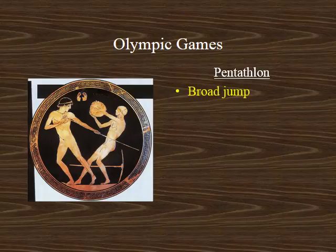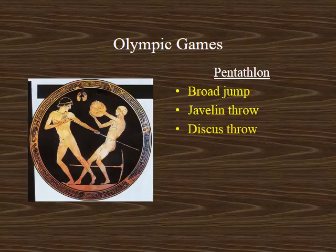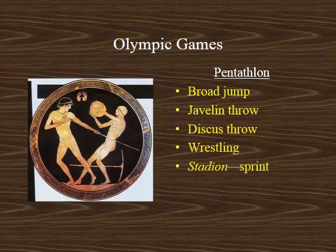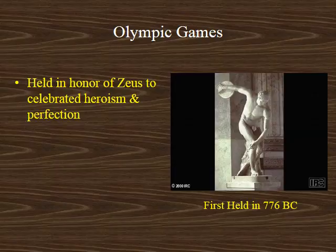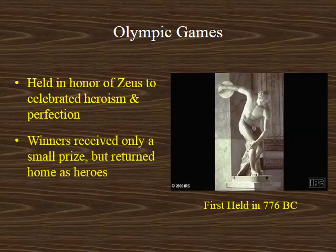The pentathlon was one of the more popular events. It involved five games: the broad jump, javelin throw and discus throw, wrestling, and the stadium — a sprint of about 200 yards, probably the premier event of the Olympics. Initially winners would only receive an olive wreath as a prize, but then the value of what they received increased. Often a successful athlete from a polis would receive a home to live in from their community. They also were treated as heroes over the years.